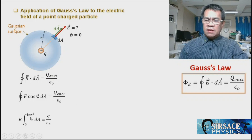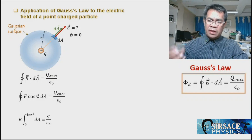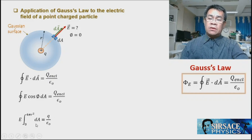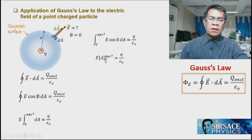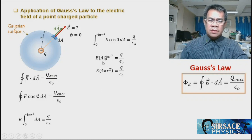Taking E outside the integral, cos(0) = 1 disappears, and the integral of dA ranges from 0 to 4πr² — the surface area of the sphere. Integrating gives E × (4πr²) = q/ε₀. Evaluating the limits, upper minus lower, we have E × 4πr² = q/ε₀.